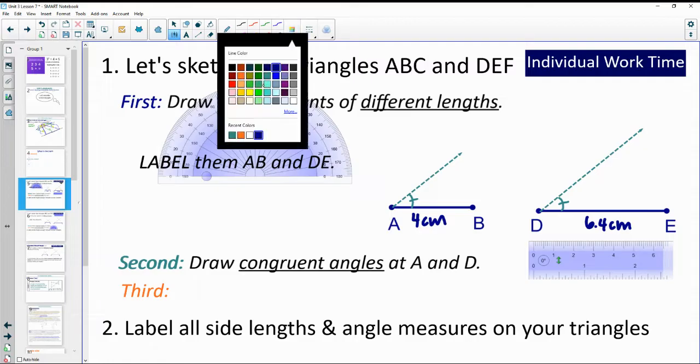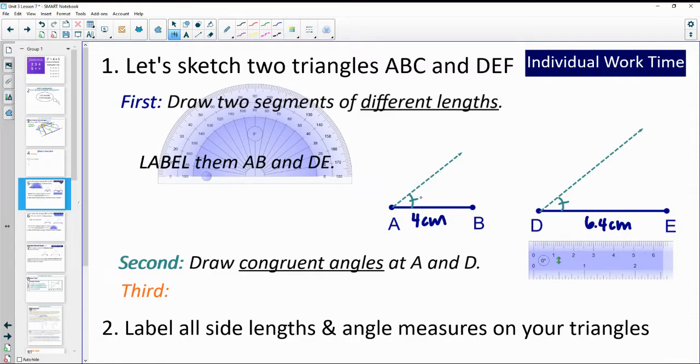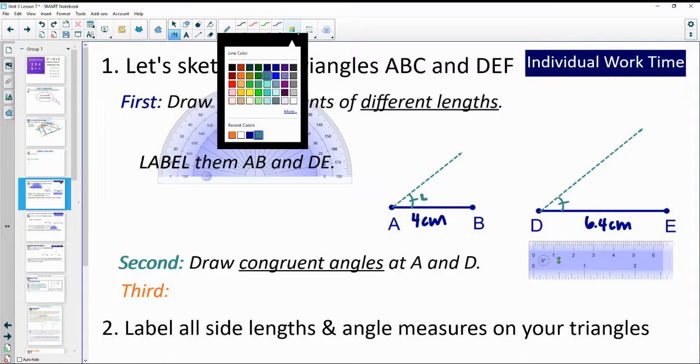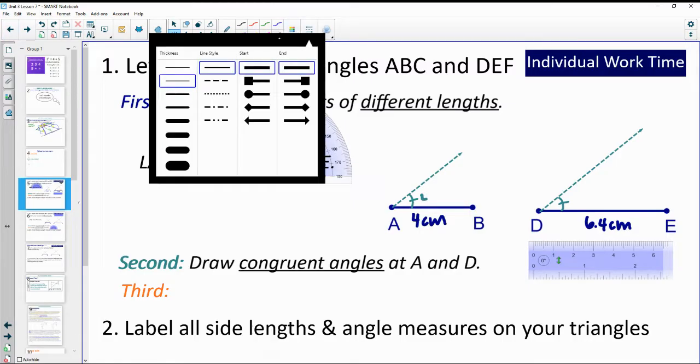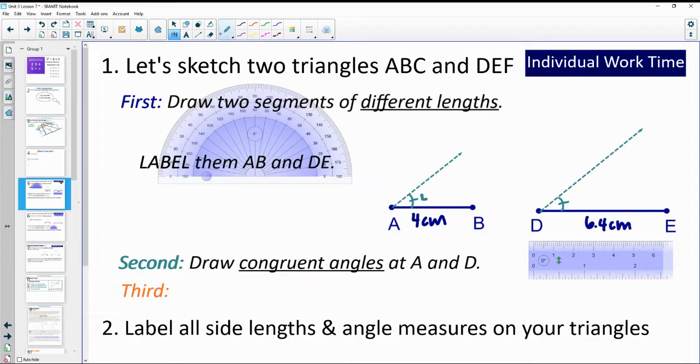And you don't have to draw the same angle measures as mine. You can do whatever you want. Just make sure that angle A and angle D, whatever you make them, are equal to each other. So I'm going to put this one as 40. I'm just going to label it as I'm going.